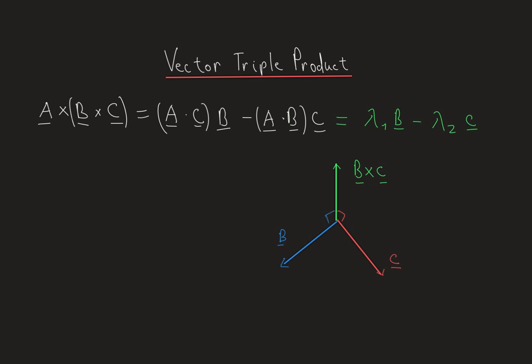In our vector triple product, we take the cross product of a with b cross c. Let's say vector a is over here. This is the key moment I want you to remember: we have vector a and we want to compute a cross (b cross c), which means the resulting vector will be directly perpendicular to b cross c.